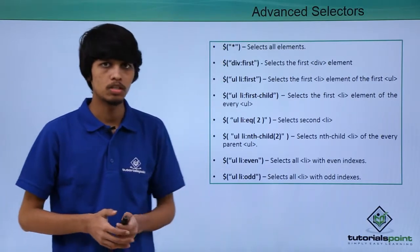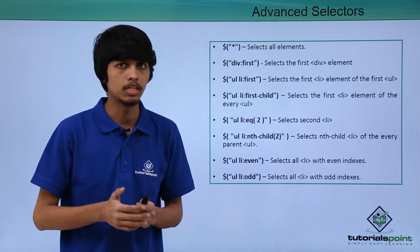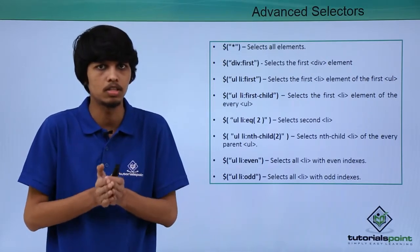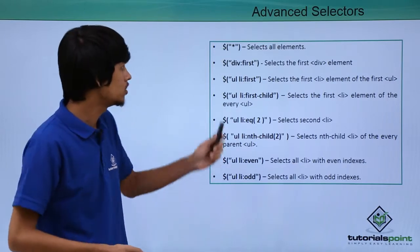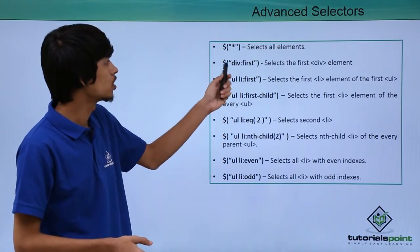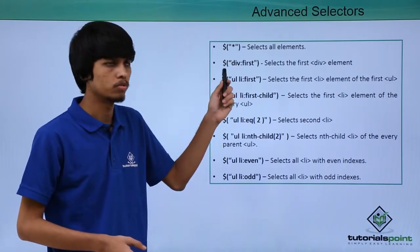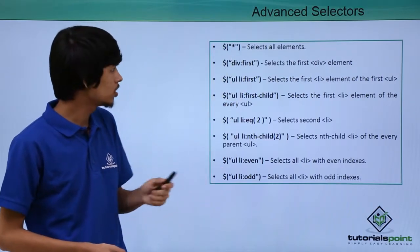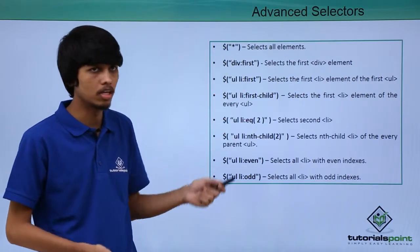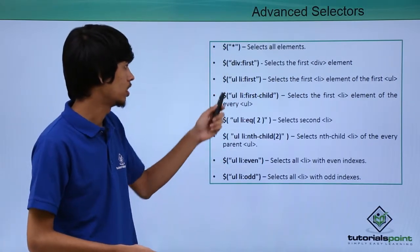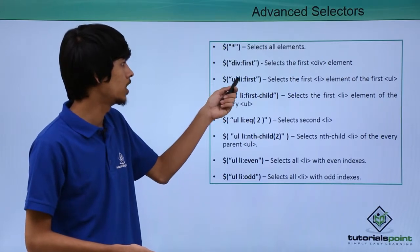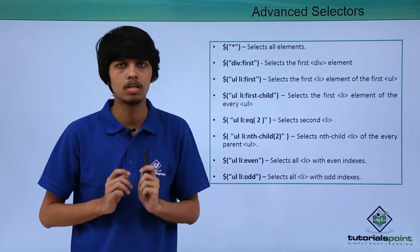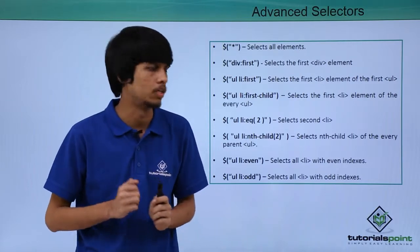The next one is :first. If we want to select the first element of a specific type in a web page, then we can use the first selector. Like here, we have used dollar div :first, so this selects the first div on the web page. Similarly, we can replace div by any other element we want. Here we have replaced it by ul li, so this selects the first list item of the first unordered list it encounters in the web page.